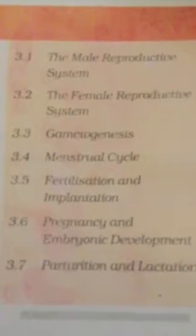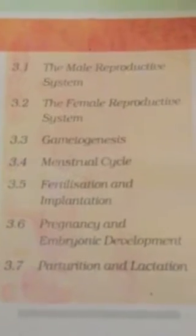Hello friends, today we are going to learn about the third chapter of biology: Human Reproduction. It is the most vital and important chapter — a lot of questions come from it. There are total seven units in this chapter: male reproductive system, female reproductive system, gametogenesis, menstrual cycle, fertilization and implantation, pregnancy and embryonic development, and parturition and lactation. Today we'll start with the male reproductive system.